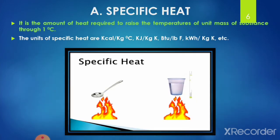Starting with the first thermal property: specific heat. Specific heat is defined as the amount of heat required to raise the temperature of unit mass of a substance through 1 degree Celsius. The units of specific heat include kcal per kg degree Celsius, kJ per kg Kelvin, BTU per pound Fahrenheit, and kWh per kg Kelvin. In other words, it is the amount of heat that must be added or removed in order to raise the temperature of unit mass of a substance through 1 degree Celsius.